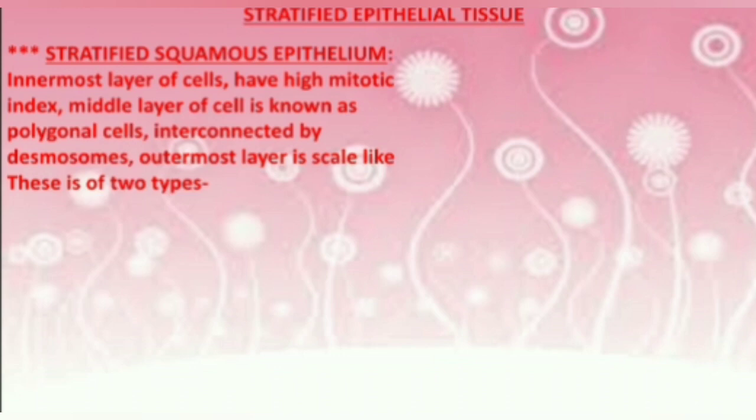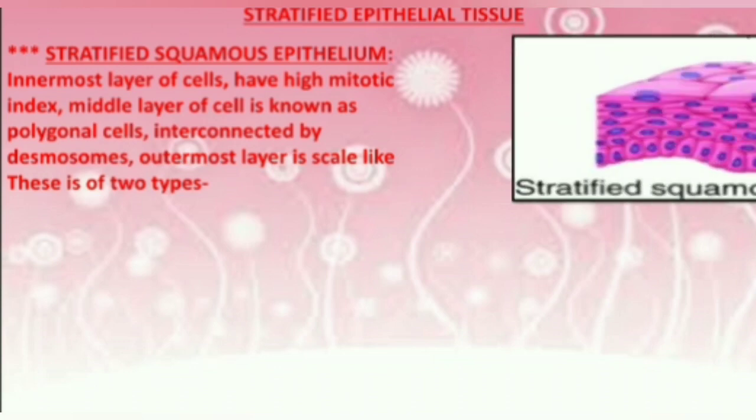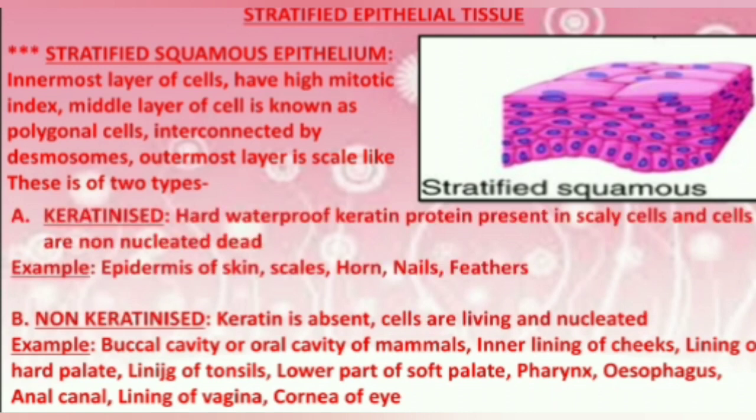The outermost layer is scale-like and is of two types: those which have keratin are called keratinized, and those which don't have keratin are called non-keratinized. For example, the epidermis of skin and scales are keratinized epithelial tissue, while the lining of tonsil, buccal cavity, and oral cavity of mammals is non-keratinized tissue.